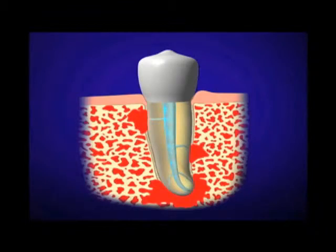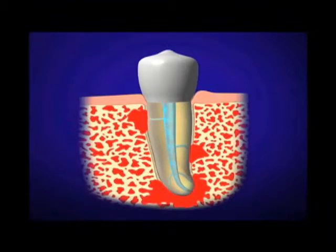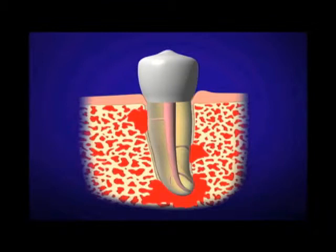The goal will be getting the access, negotiating these canals to their terminus, and shaping. We need deep shape so that we can exchange our irrigants. It must be fully understood and completely appreciated that active irrigation can allow our irrigants to penetrate, circulate, and digest tissue in the uninstrumentable portions of the root canal system. And of course, it's quite easy to fill a well-shaped canal, and warm gutta-percha would be on my mind.